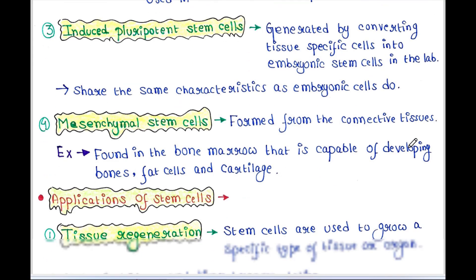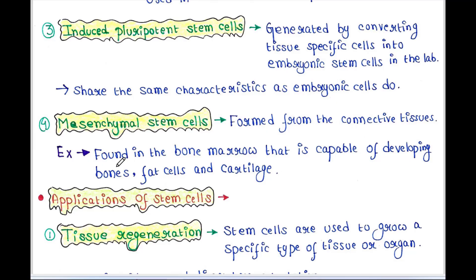Next are mesenchymal stem cells, which are formed from the connective tissues. For example, they are found in the bone marrow and are capable of developing into bones, fat cells, and cartilage.